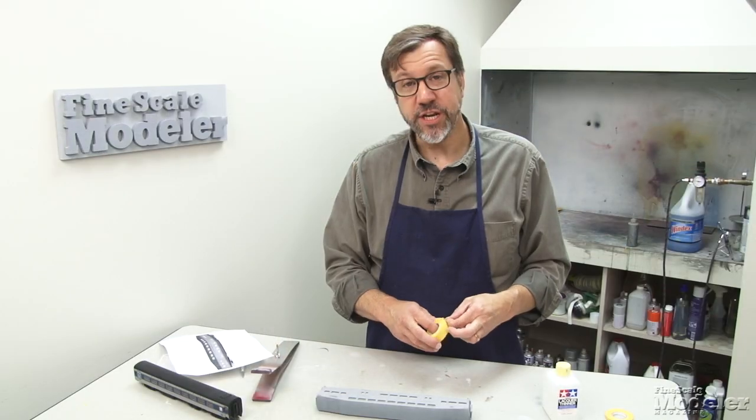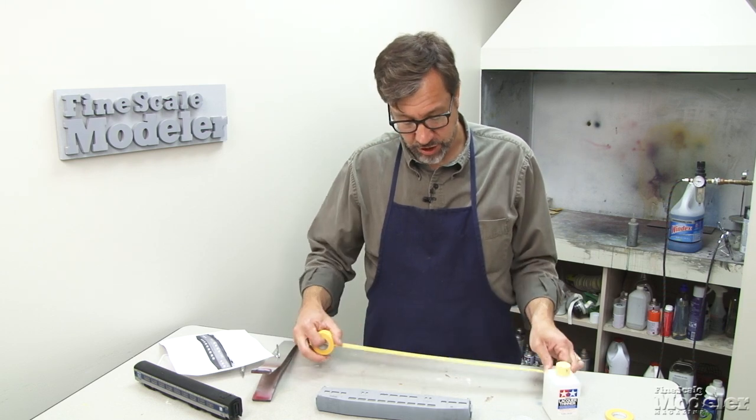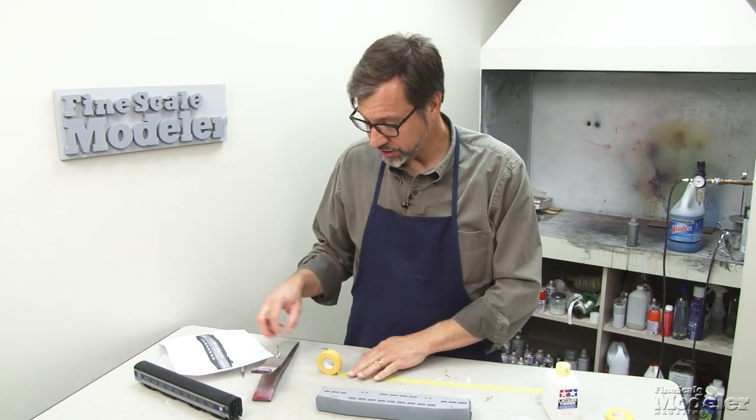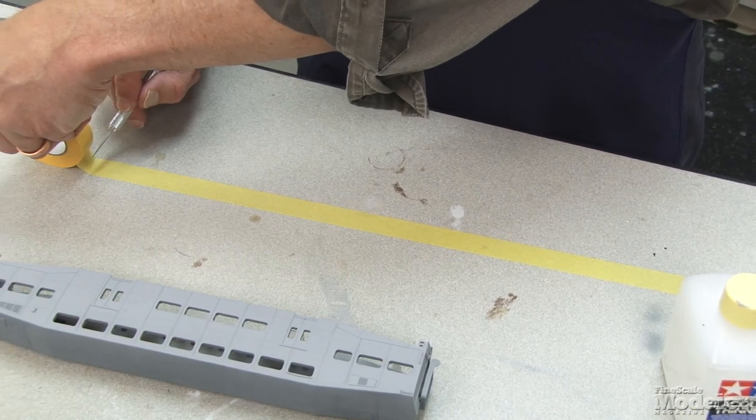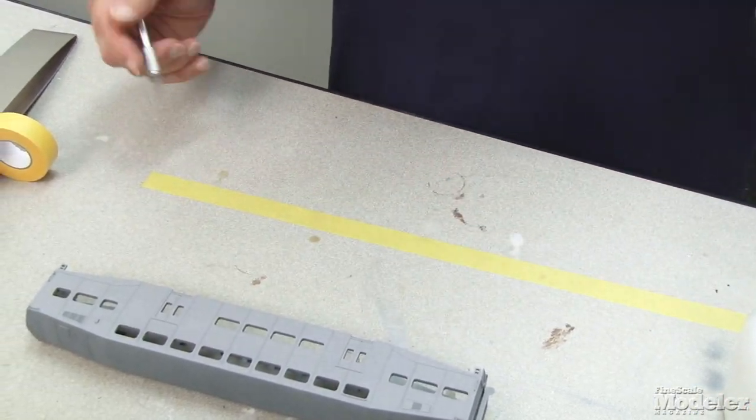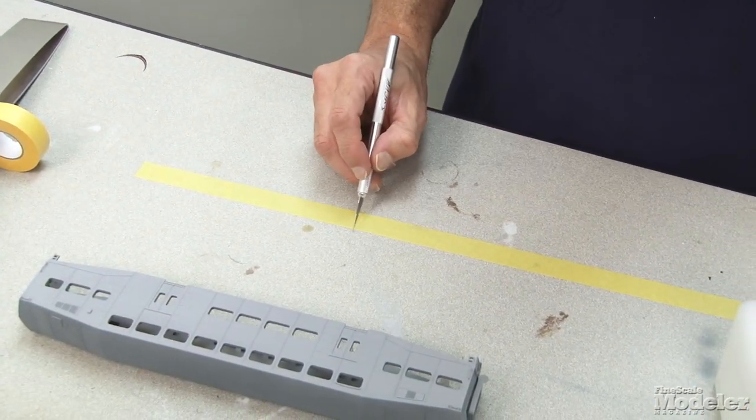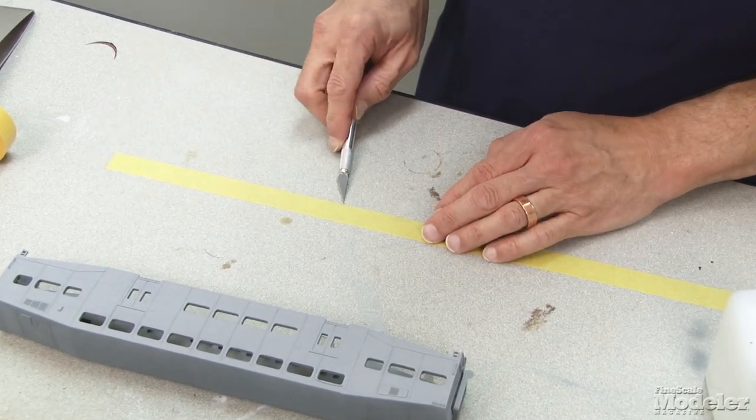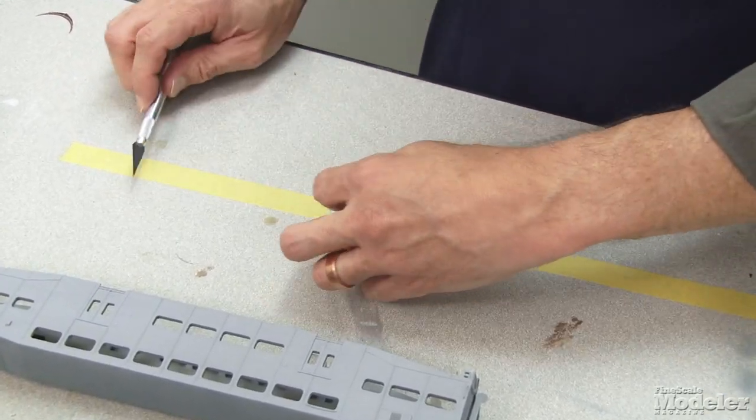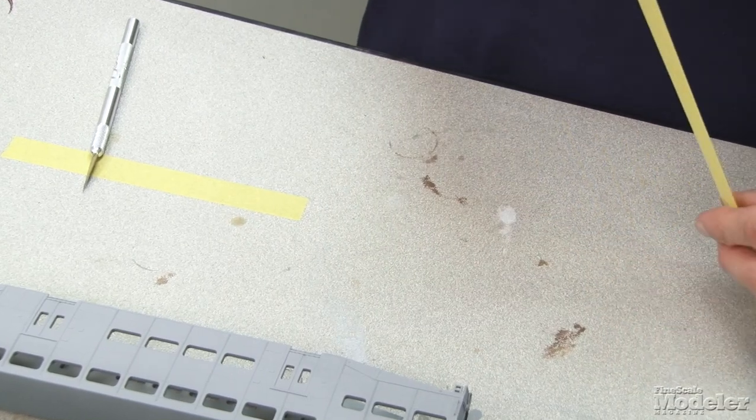So to start the process, we need to get some tape. I like to roll out a fairly long strip, stick it to my table, and then cut it off. And then I kind of judge how much I need. It just makes it easier than trying to work off the roll.